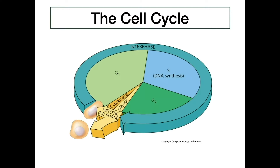Moving on to the cell cycle — there are four phases we're concerned with. The first is G1, when the cell undergoes growth and prepares all the materials and tools necessary to begin DNA replication. DNA replication then occurs in the S phase, where the entire genome is replicated so that both daughter cells will have complete sets of genetic material. After S phase comes G2, the second growth phase.